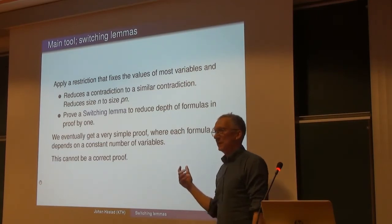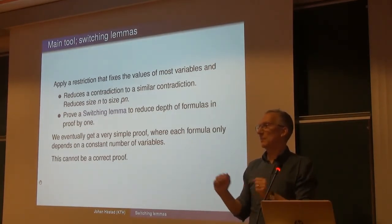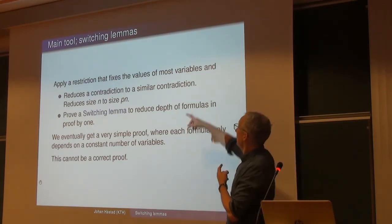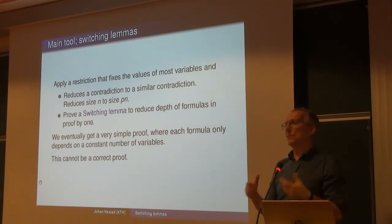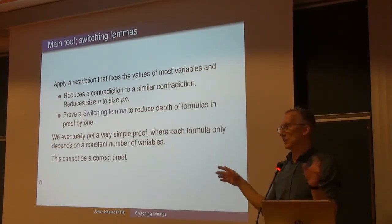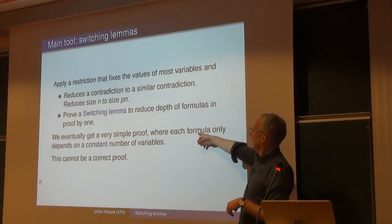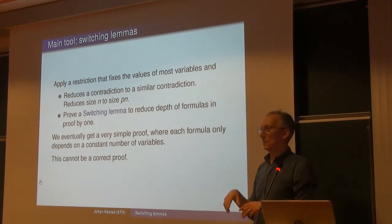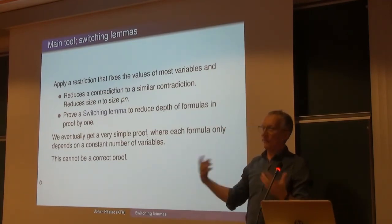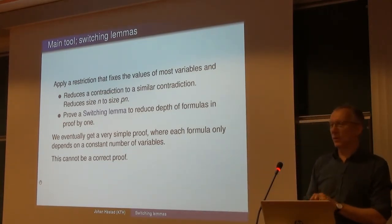How does the switching lemma come in here? We have some proof containing formulas of small depth, and we fix most of the variables. We achieve two things: reduce the contradiction to a similar one on smaller size, and use the switching lemma to reduce the depth of all circuits in the proof by one simultaneously. When we've done this enough times, every circuit in the proof depends on only a constant number of variables — making it a really stupid circuit that can't be a valid proof.